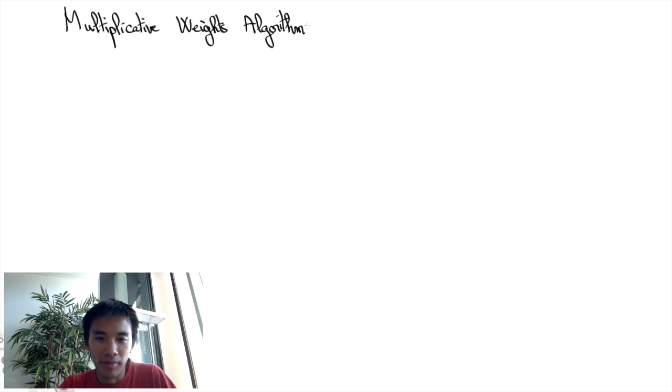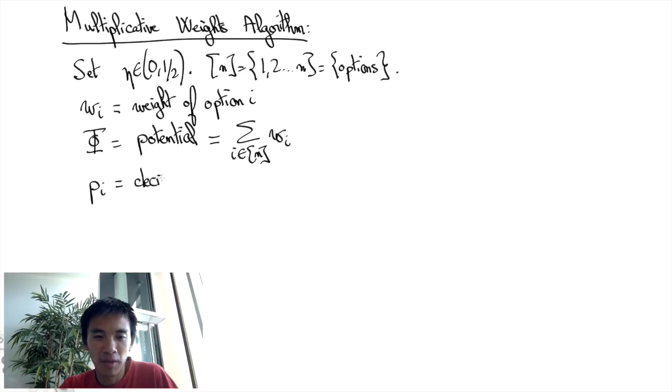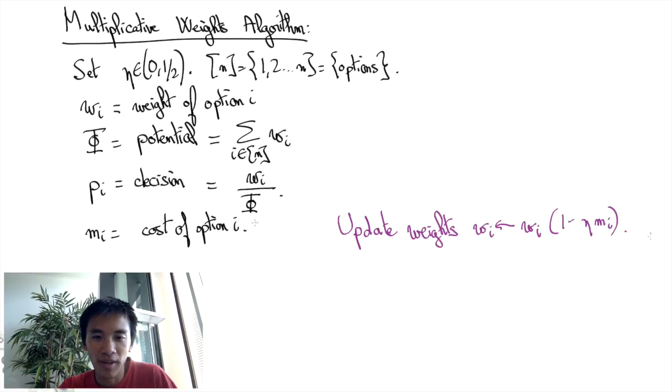Let me briefly recall the algorithm. We have a constant eta that's between 0 and 1/2, a set N of options, weights wi given to the different options, a potential function phi which is the sum of all weights, decisions pi that are determined by wi divided by phi, and losses mi that are associated to decisions. We consider the update rule, the Multiplicative Weights Update rule, that says wi at the next round is going to be wi at the previous round times 1 minus eta mi. And this is repeated over time.